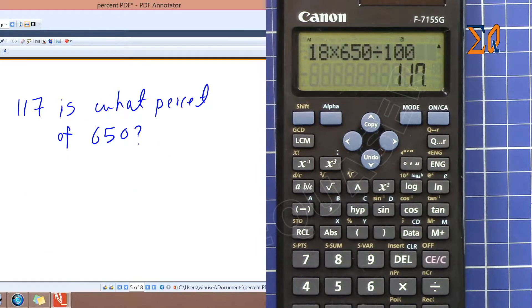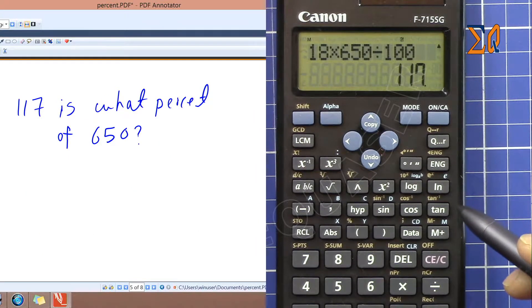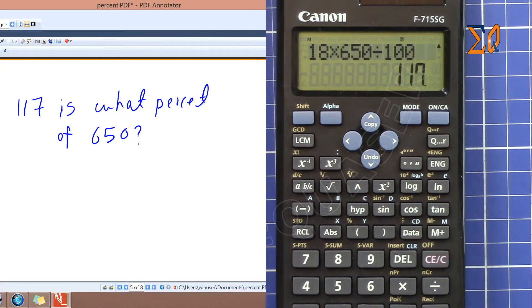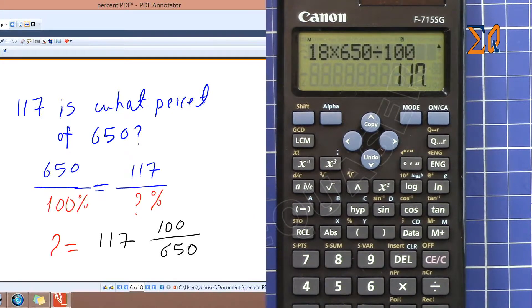So the other question would be 117 is what percent of 650. We know that in the previous example we did, it's 18, but let's see how we can find it.